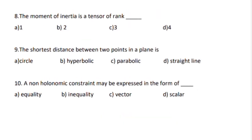Ninth one, the shortest distance between two points in a plane is a straight line.